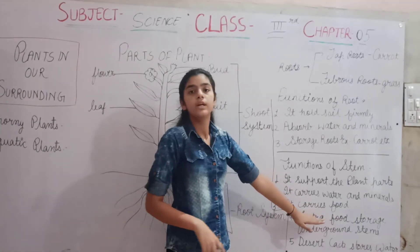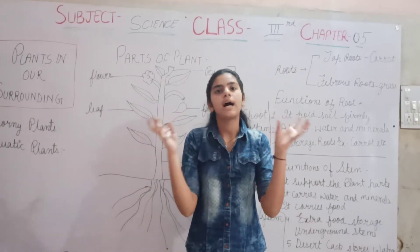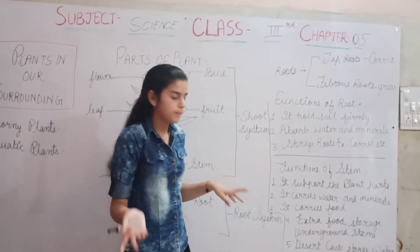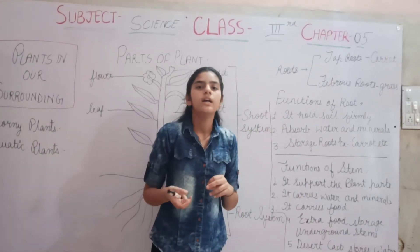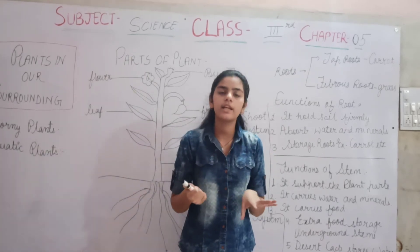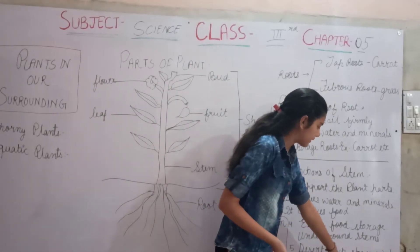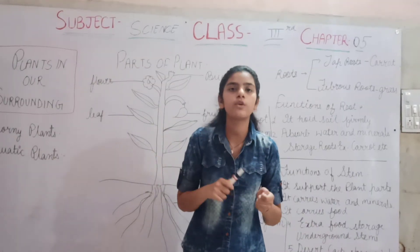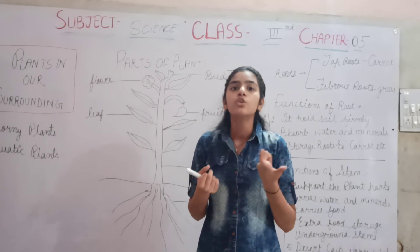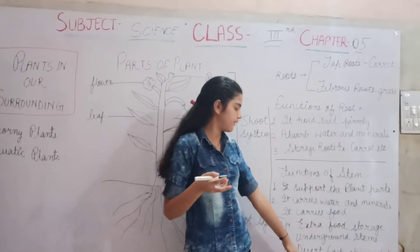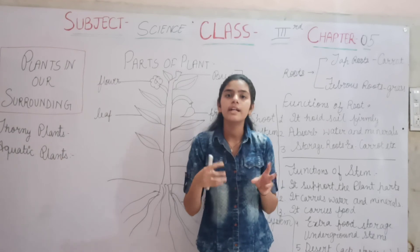Third, the stem carries food. The leaves prepare food, and the stem carries that prepared food to all parts of the plant. Fourth is extra food storage — some underground plants like potato and ginger store food in their stems. Also, in desert areas, cactus plants store water in their stems because water quantity is very low there.